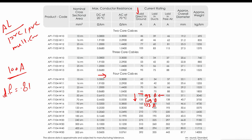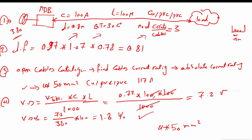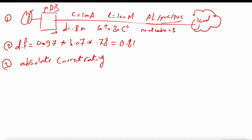The 50 sq mm cable is not acceptable. We select 70 square millimeters, which gives a derated current rating of 109 ampere — acceptable for our 100A requirement.